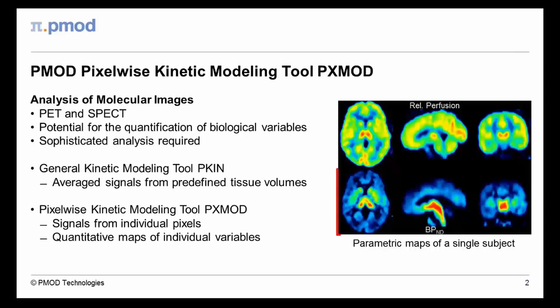This creates quantitative maps of individual variables, as shown in the example to the right. The beauty of this approach is the visualization of the spatial parameter distribution and its further use for statistical comparisons.